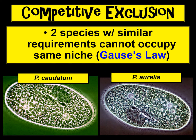A scientist named Gause discovered what we now call the competitive exclusion principle. What this says is that if there are two species with very similar requirements — for example, they live in the same habitat and eat the same food — they usually cannot occupy the same niche, they can't coexist, and they cannot live together in that same environment. The very famous experiment demonstrating this is with paramecium, specifically two species: Caudatum and Aurelia, which have a very similar niche.